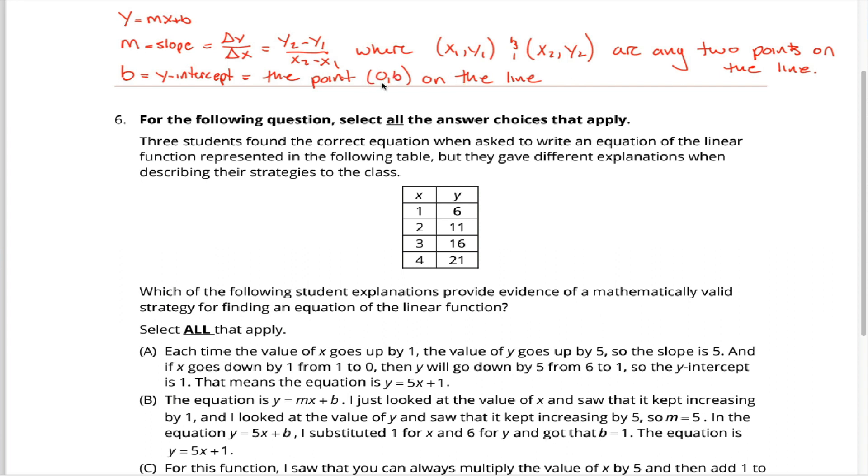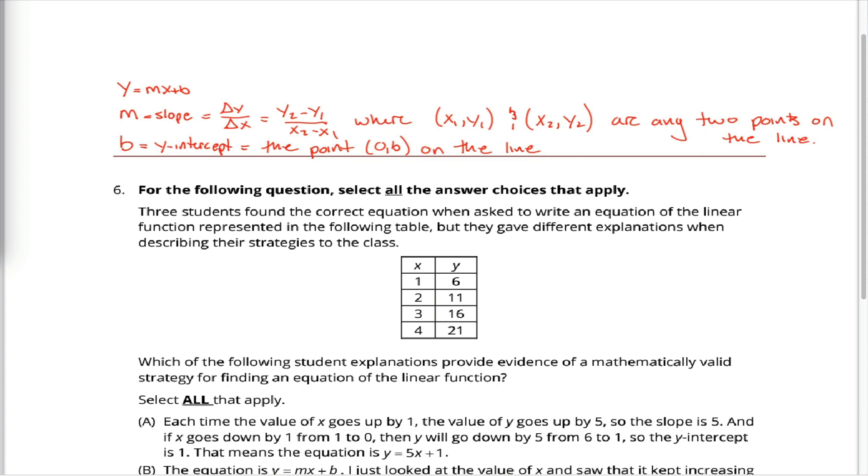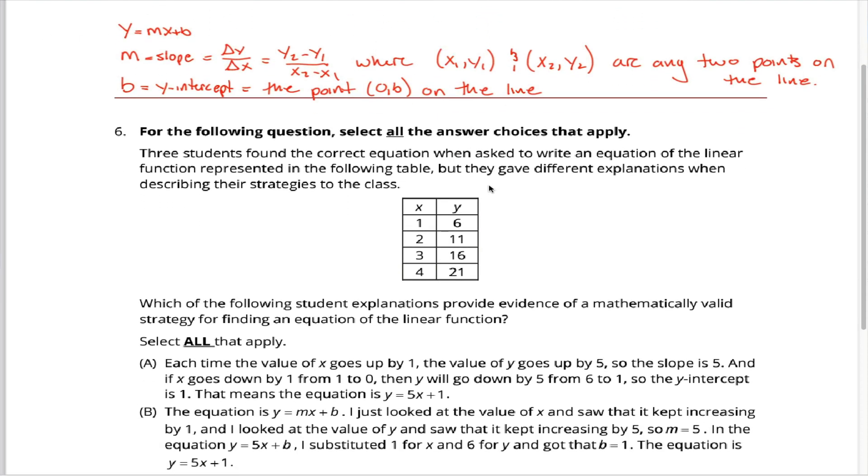It's worth pointing out that there must be such a point unless you have a vertical line. If you have a vertical line, you can't write it in this format, it's just x equals some number. If you have x equals some number, that's the vertical line passing through the point (that number, 0). That's kind of the special case. Typically we're not talking about vertical lines, because typically we're talking about linear functions, which is the case here. Vertical lines don't represent functions, so we don't have to worry about those. All that to say, a linear function is of the form f of x equals mx plus b, m is the slope, b is the y-intercept.